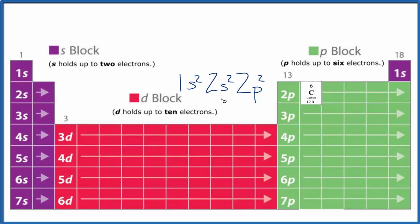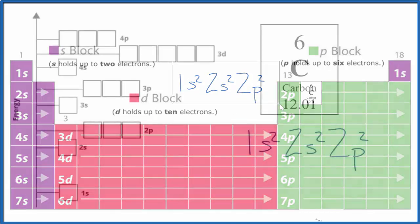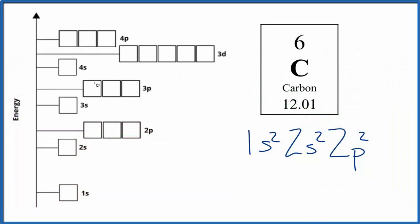If you need help with that, there's a link in the description and at the end of this video. Now let's write the atomic orbital diagram for carbon. We have the electron configuration, and this is just another way to write it, this orbital diagram.